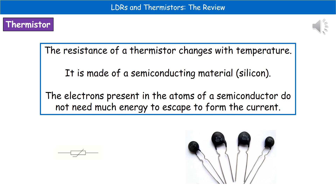The first one we're going to consider is something called a thermistor. With a thermistor, the resistance is going to change as the temperature changes. The reason it can do this is because it's made of a material like silicon, which is known as a semiconductor. Any electrons present within the atoms of the semiconductor don't require a large amount of energy to escape.